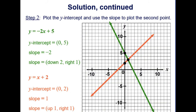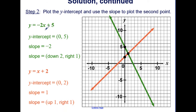Now we can plot the y-intercept and use the slope to plot a second point. For the first equation, y equals negative 2x plus 5, our y-intercept is (0, 5) since our constant is 5. Our slope is negative 2 over 1, which tells us to go down 2 and right 1. That's the green line here, with a y-intercept of 5, going down 2 and right 1.